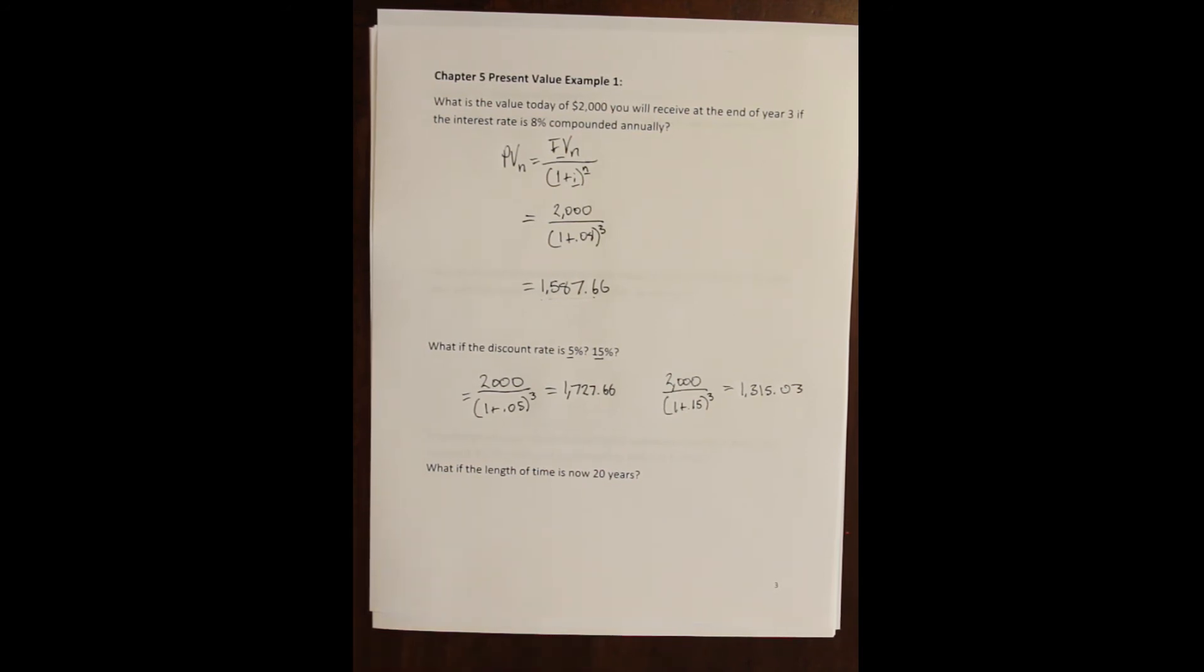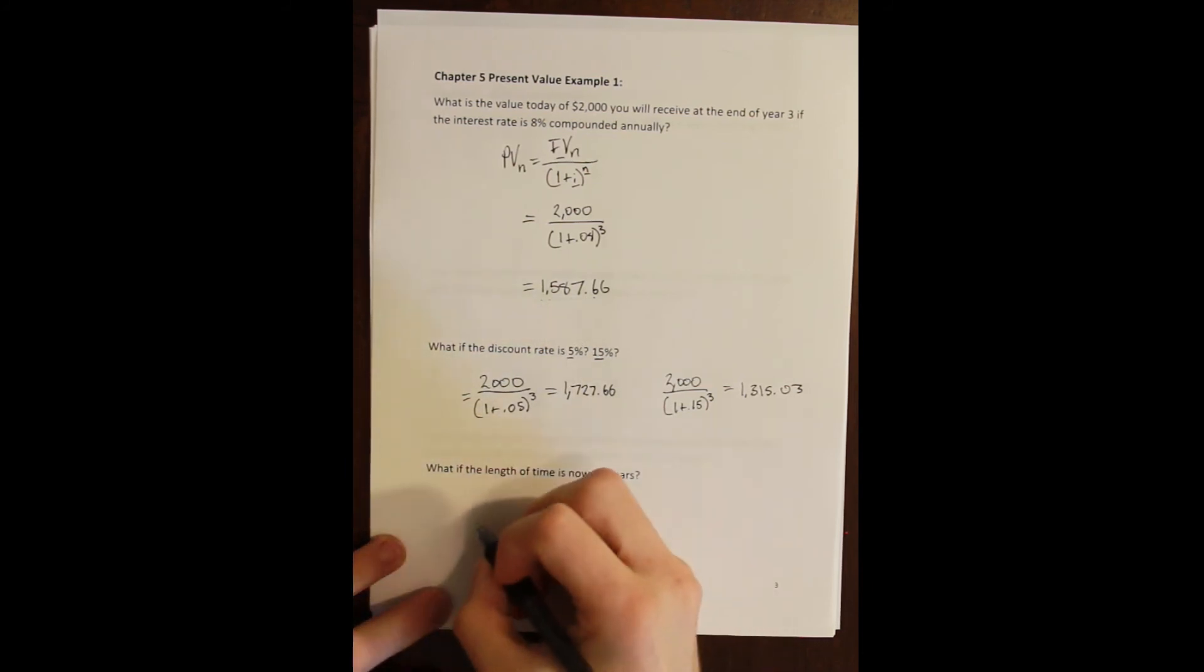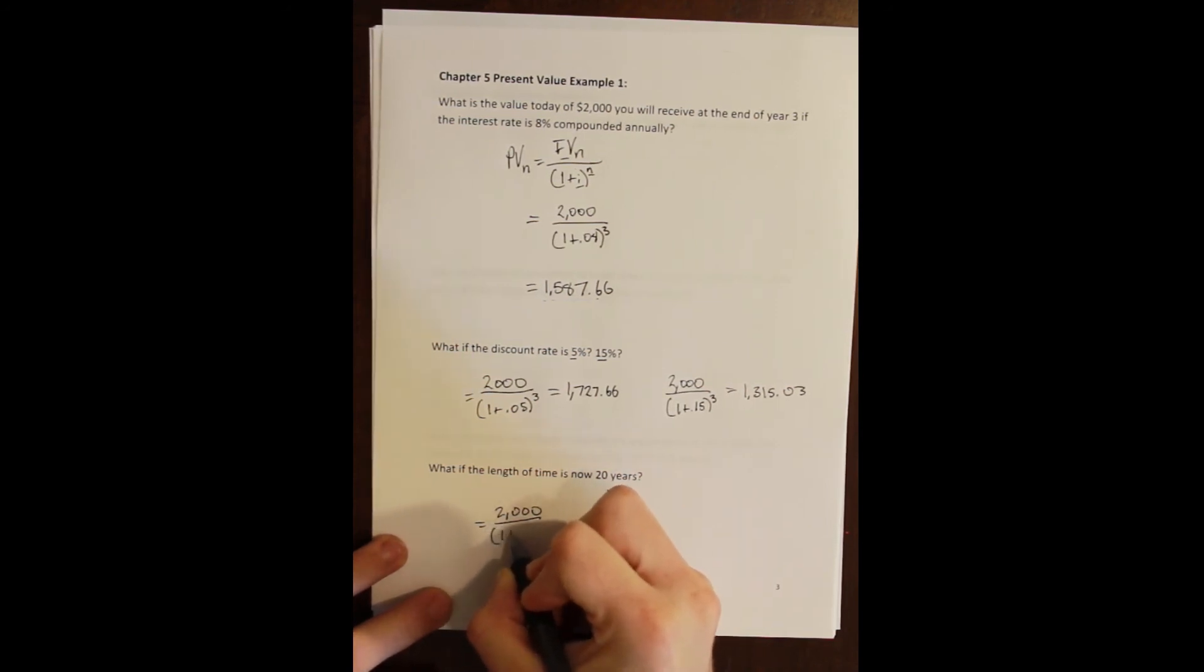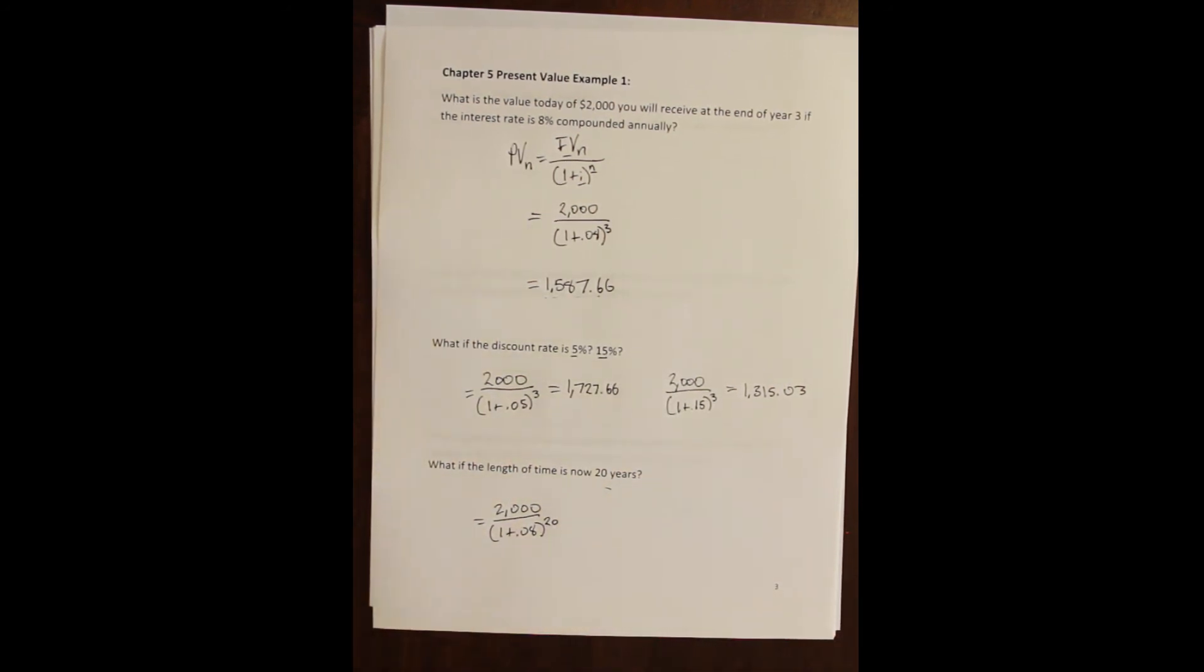So now let's look at the time value of money over the relationship between present value and time. So what if the length of time in this investment is now 20 years instead of three, what should we expect to happen to the present value amount? And again, it's useful to think about this from the other direction. If I am still going to earn 8%, but I have 20 years to earn that amount instead of three, so my n is 20.